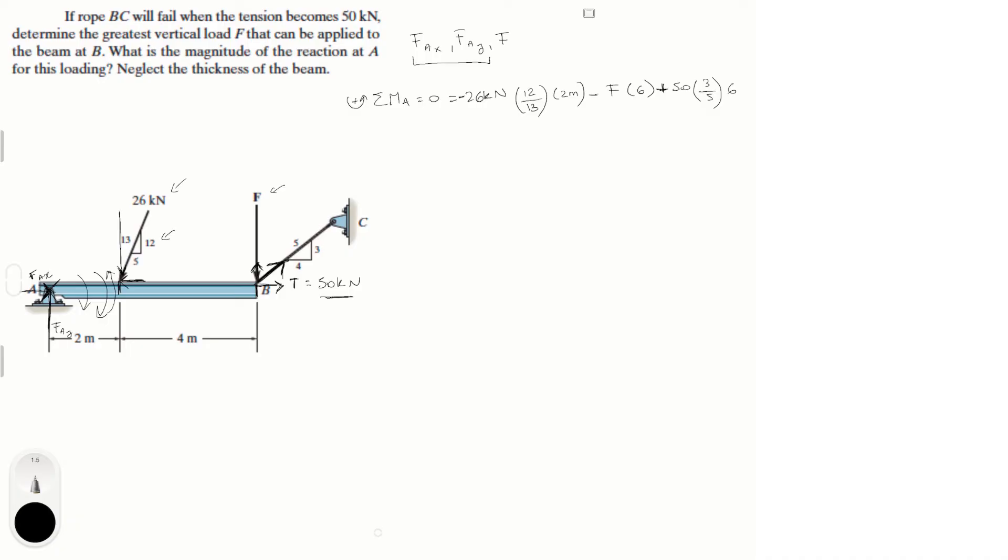So as you can see from this equation, we only have one variable, which is F. So if we simplify this, this is 0 minus 48 minus 6F plus 180. And if you solve for F, you should get that F is equal to 22 kN.